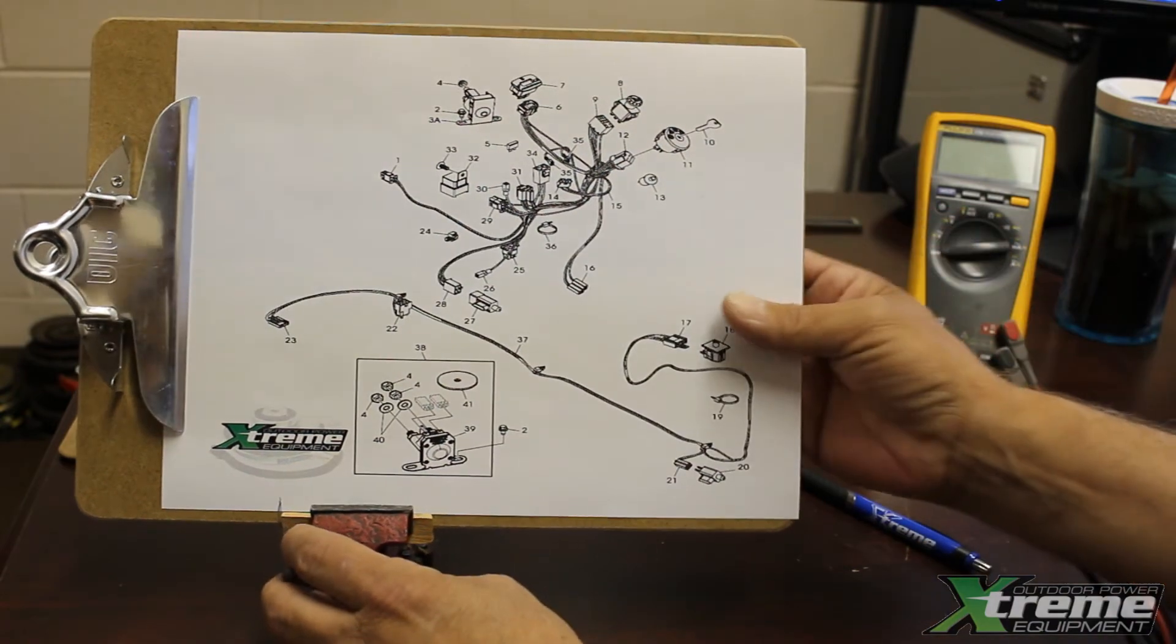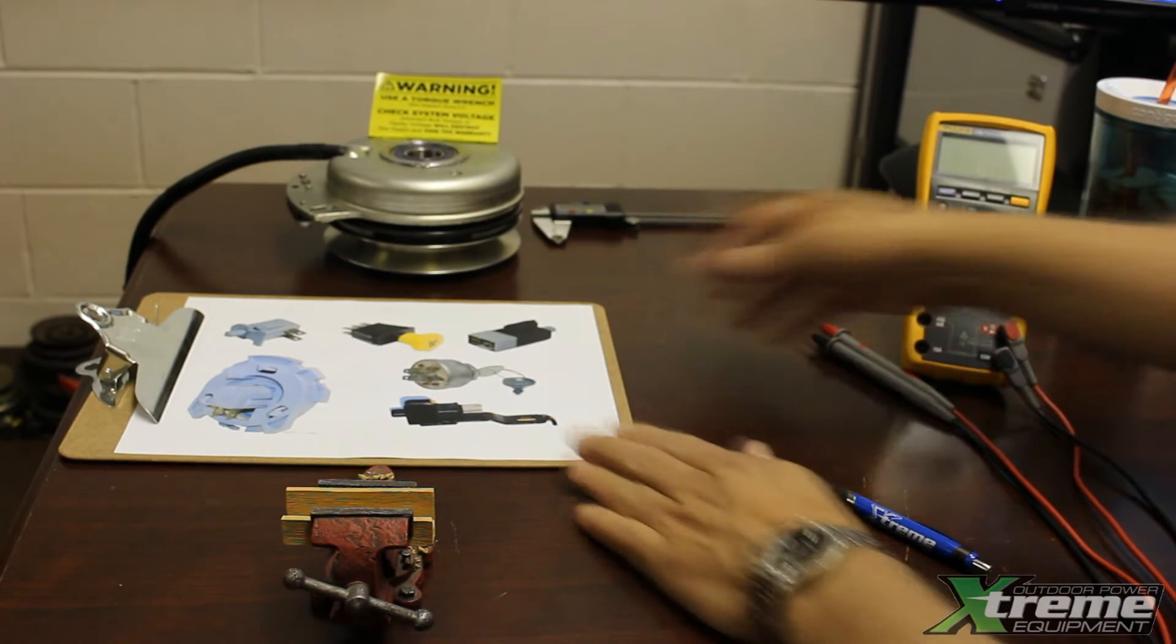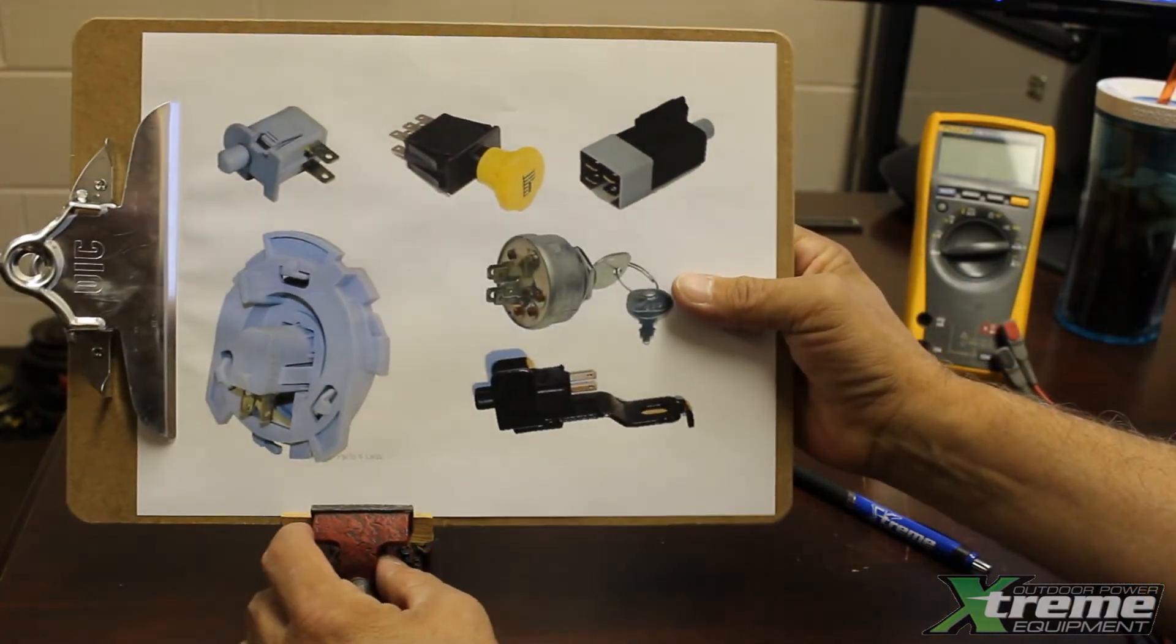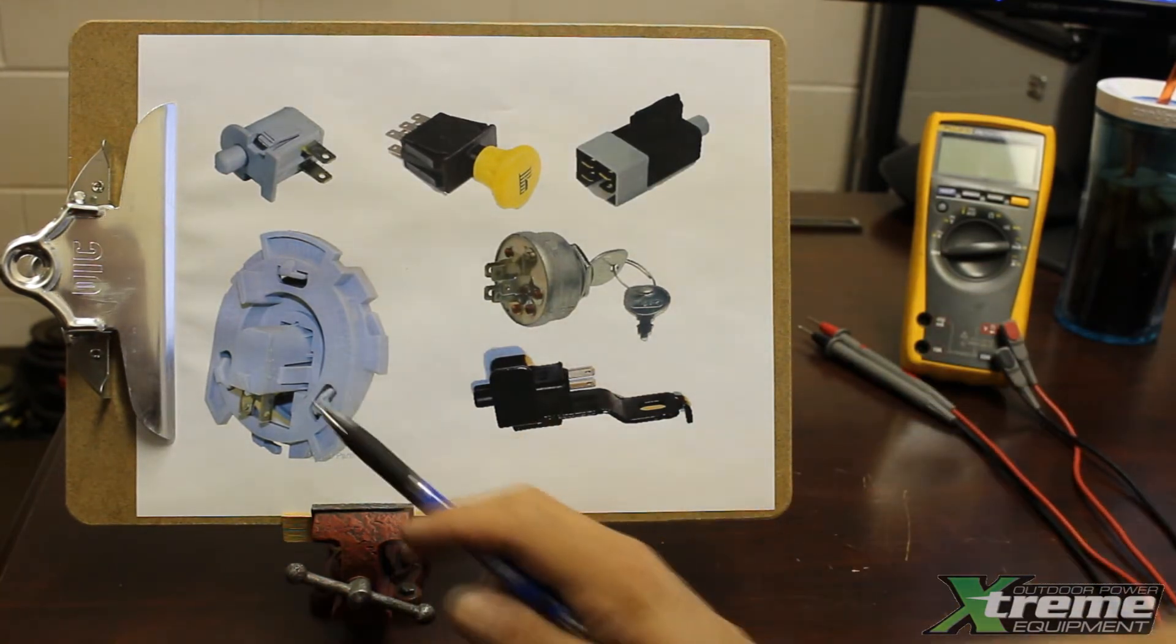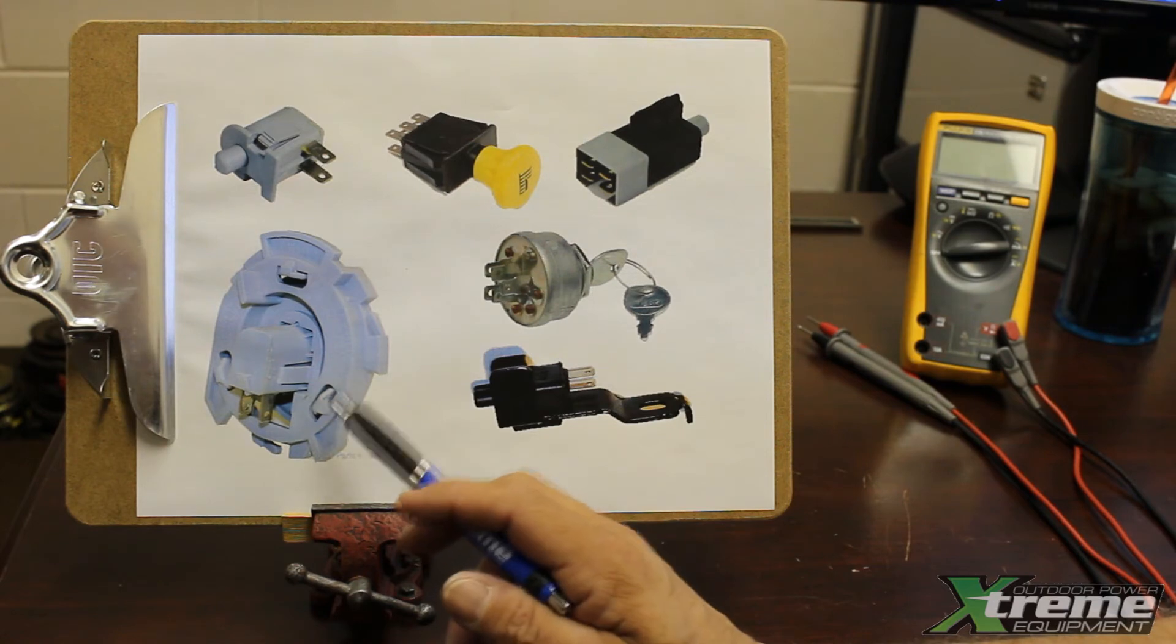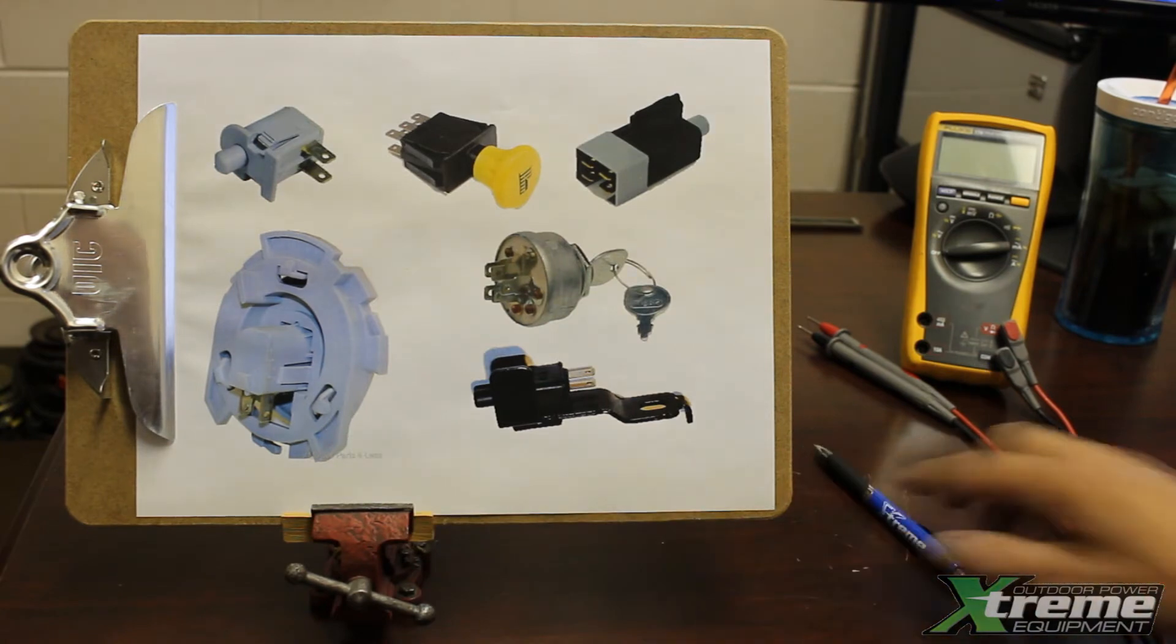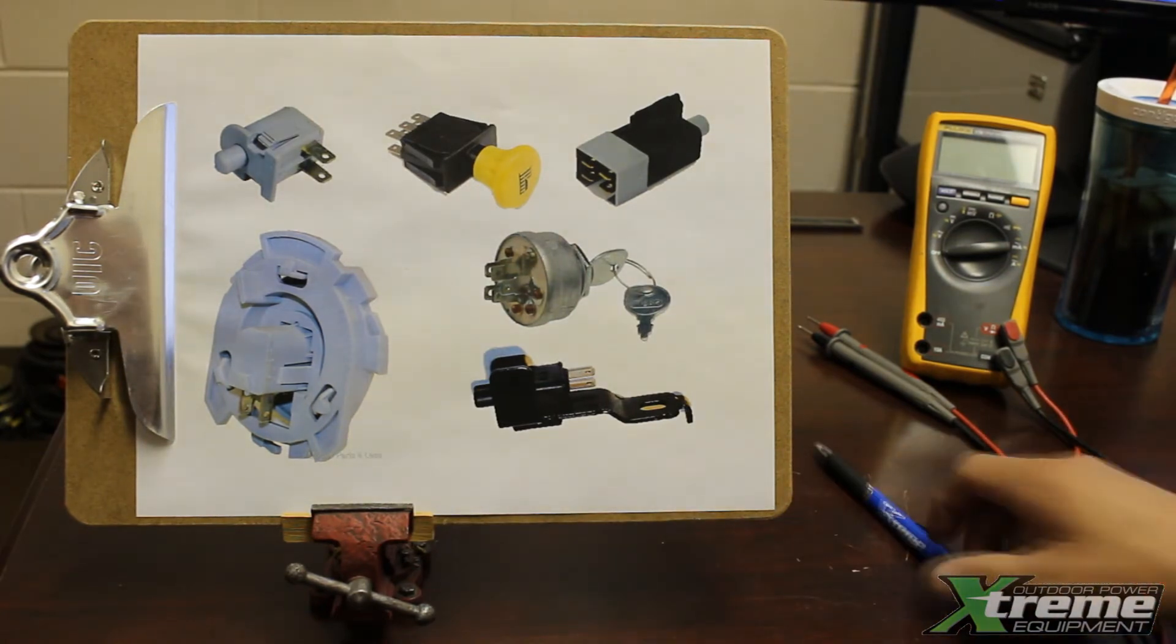Once we've identified what to look for, we need to check those switches. We've got an image here of all the things that basically need to be looked at. Normally the biggest culprit is the seat switch, so we'll want to make sure that seat switch is actually working, and you have to be seated in the mower to pull the PTO switch.